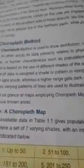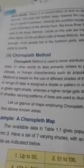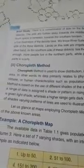There is another method: the Choropleth method. This is another method to show distribution in a given area over a specific area. In other words, its data primarily relates to physical phenomena such as climate or population density. In this method, we show the distributions using shades of colors or patterns. Here is an example of the Choropleth method on pages 8 and 9.